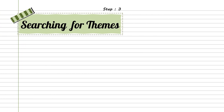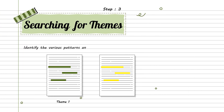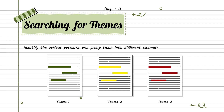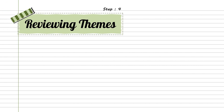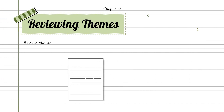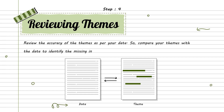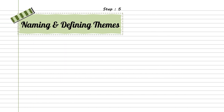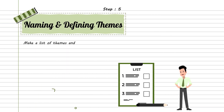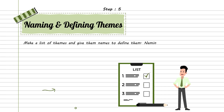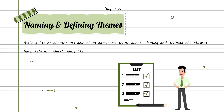After coding the data, identify the various patterns and group them into different themes. Now, you need to review the accuracy of the themes as per your data. So, compare your themes with the data to identify the missing information. Moving ahead, make a list of themes and give them names to define them.